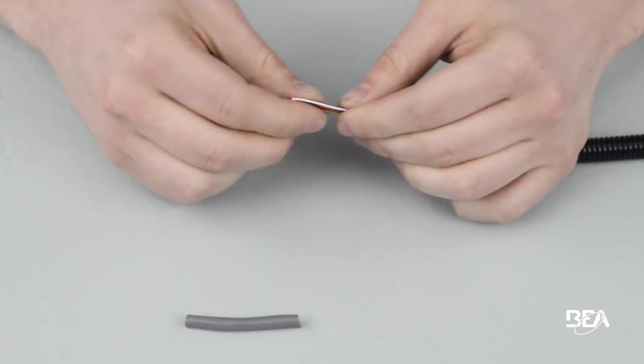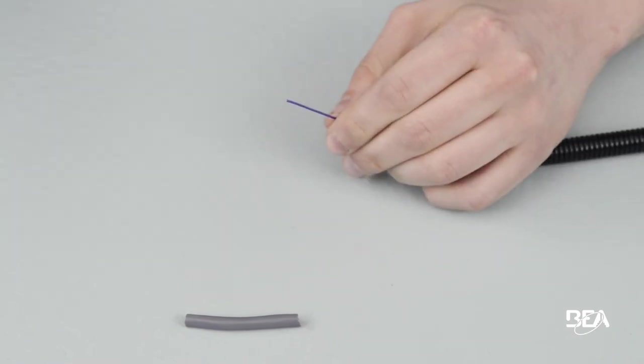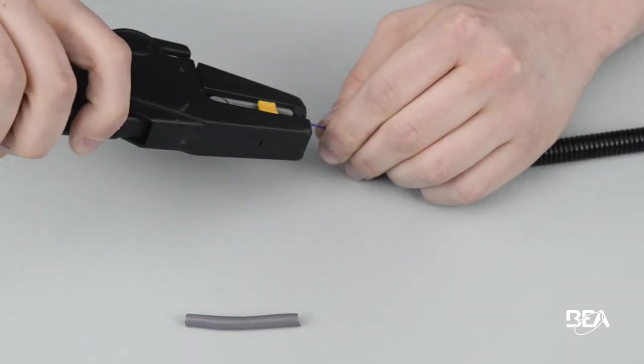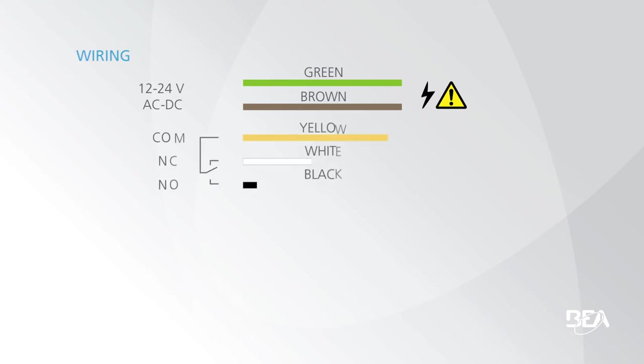Cut the power cable to the right length. Strip the wires and connect them according to the wiring diagram in the user's guide. Connect green and brown to the power supply of the door controller. Connect yellow and white or black to the stop command of the door.